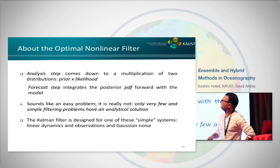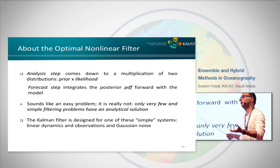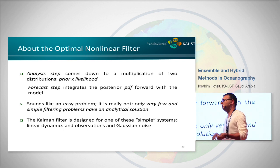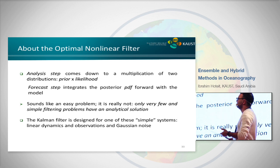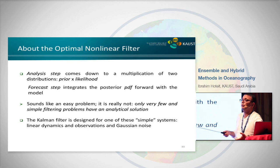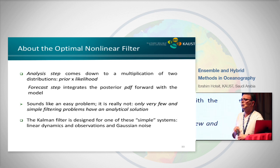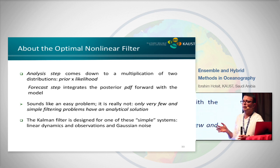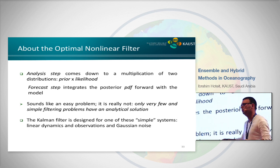The analysis step comes down to a multiplication of two distributions. If both are Gaussian, I end up with a Gaussian and the blue equation. However, since the ocean model is nonlinear, even if you start with a Gaussian and integrate it with the model, you get a non-Gaussian distribution. In this case, the blue formulation breaks down and I have to make assumptions. Multiplying two non-Gaussian distributions is quite complicated.